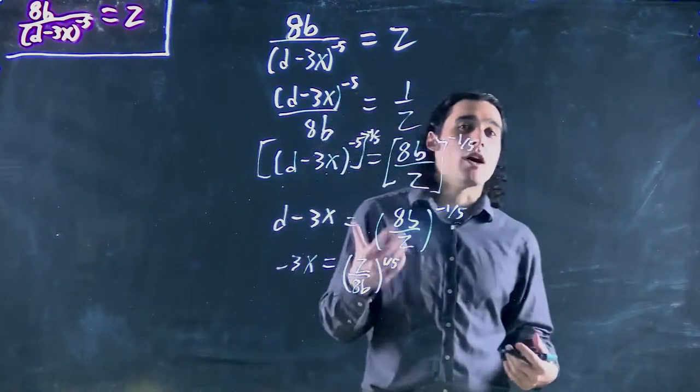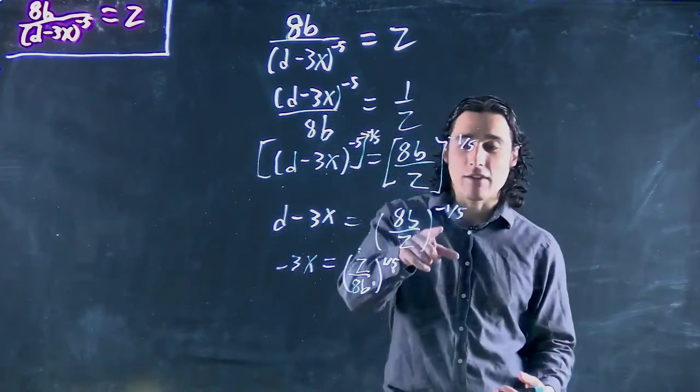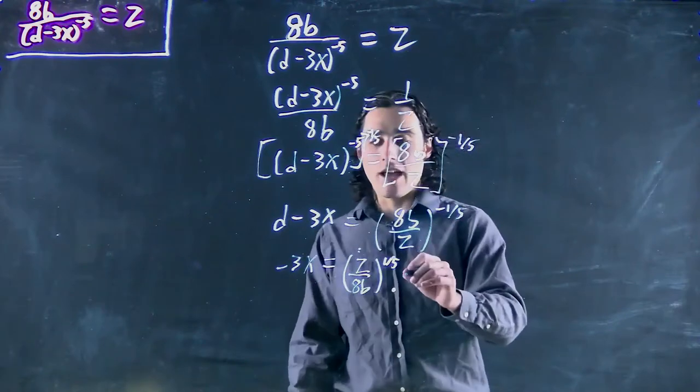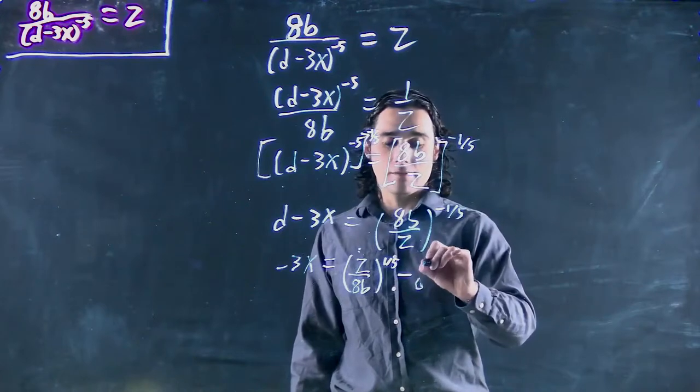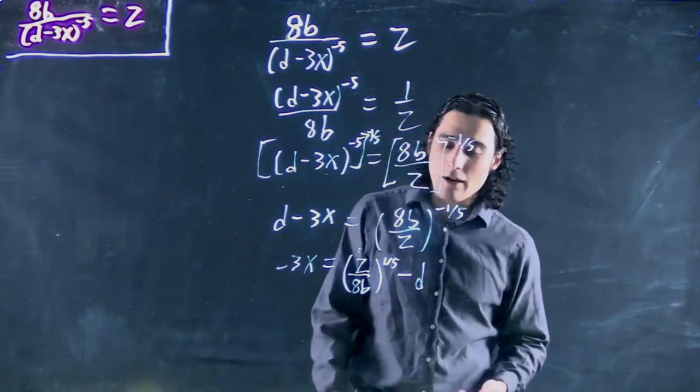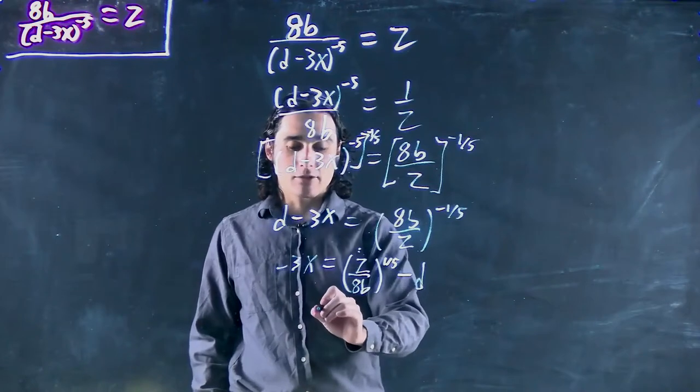It doesn't matter. It depends if you wanted to get rid of the negative exponent or not. You could have left it flipped with a negative; chose to get rid of that. And that is in turn minus d. And now we just have to divide each term by minus 3 to give us x equals...